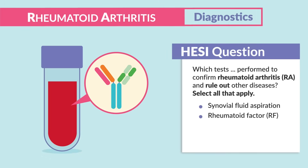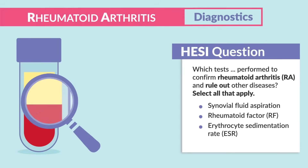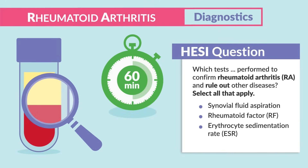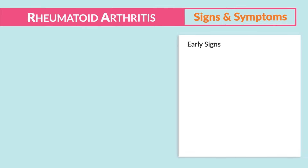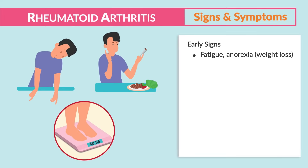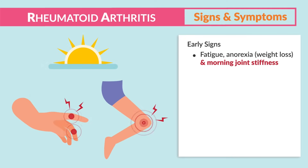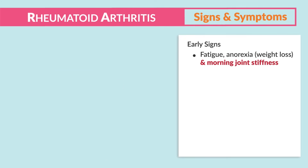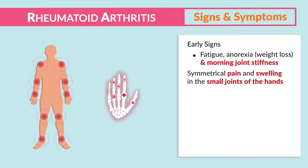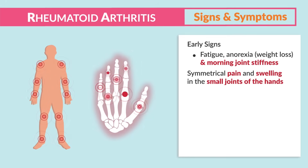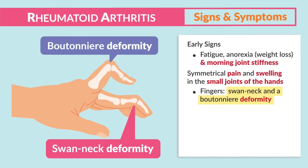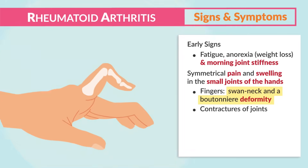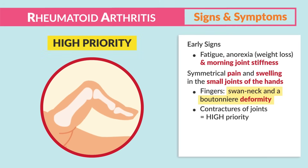Early signs of RA include fatigue, anorexia with weight loss, and morning joint stiffness. It then progresses into more severe symmetrical pain and swelling in the small joints of the hand including the fingers. A key term is swan's neck or boutonniere deformity — we see contractures of the joints, which is a very high priority finding.